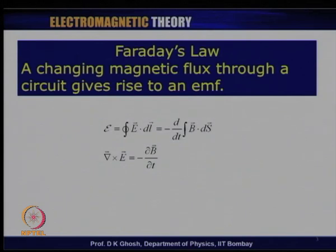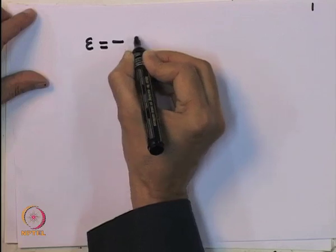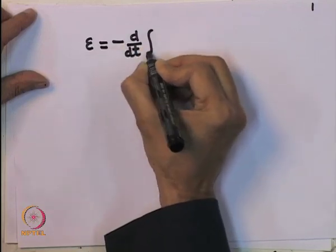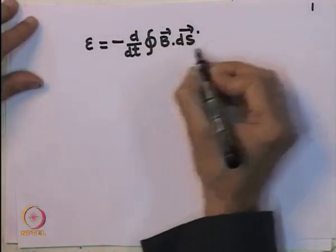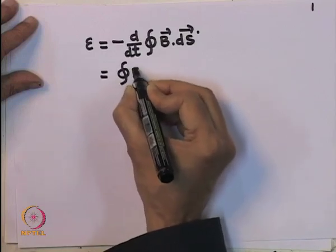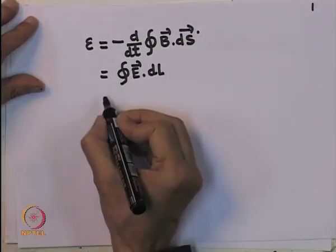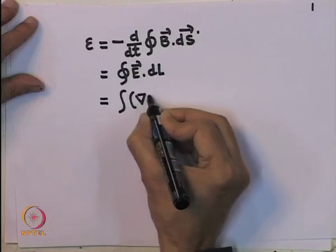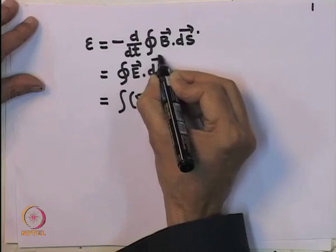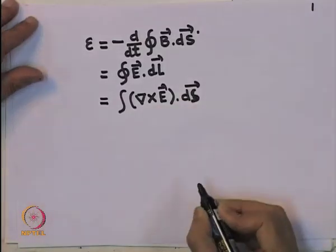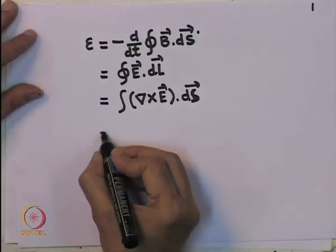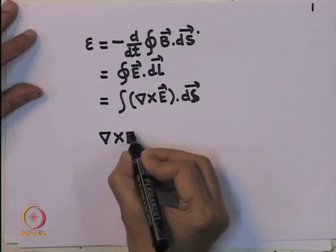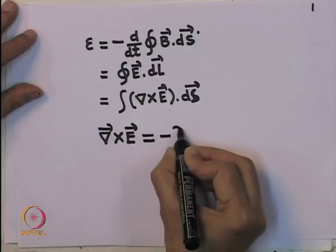The EMF, which is the line integral of the electric field, is the rate of change of flux. EMF is given by minus d/dt of the integral of B dot dS, and EMF by definition is the line integral of the electric field, which by Stokes' law we can write as a surface integral of the curl of the electric field. By comparing these expressions, since this is valid for any surface, we can write the differential form of Faraday's law: del cross E equals minus dB/dt.